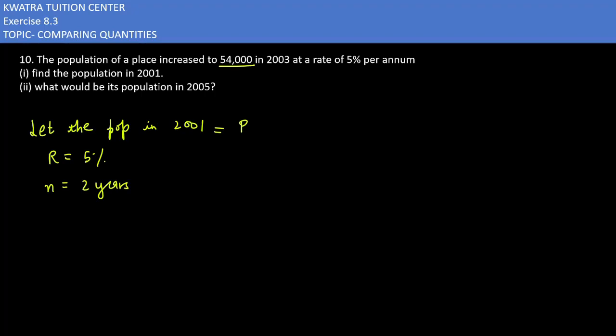Now you have to use the formula of amount: A = P(1 + R/100)^n. The amount value is 54,000. Principal will be as it is, R value 5 over 100. Left side you have 54,000, principal will be as is.